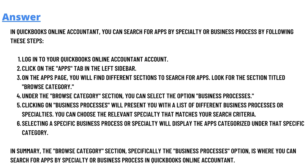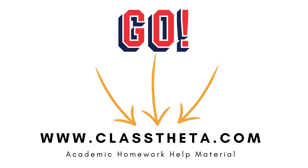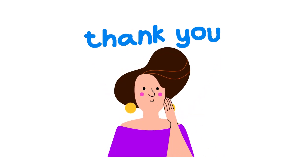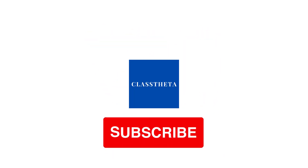In summary, the browse category section, specifically the business process option, is where you can search for apps by speciality or business process in QuickBooks Online Accountant. That's the correct answer. If you have any other questions, just leave a comment and I'll get back to you as soon as I can. Thank you very much for watching. Until next question, bye bye.